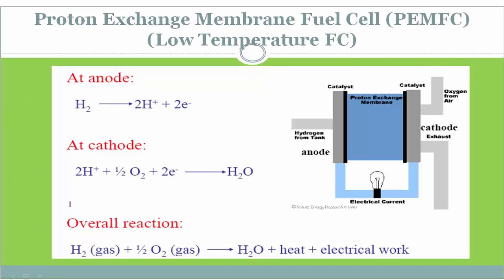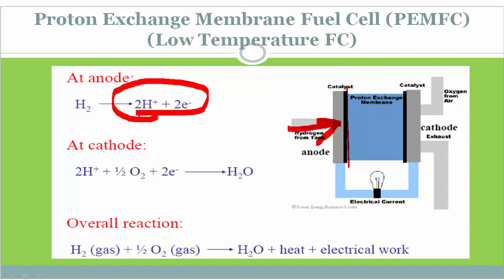The proton exchange membrane fuel cell is a low-temperature fuel cell with an operating temperature of around 50 to 100 degrees Celsius. At the anode, hydrogen is supplied from a hydrogen tank. The reaction at the anode is: H2 → 2H⁺ + 2e⁻, facilitated by a platinum-based catalyst. At the cathode, oxygen is supplied, and the reaction is: 2H⁺ + 2e⁻ + ½O2 → H2O.